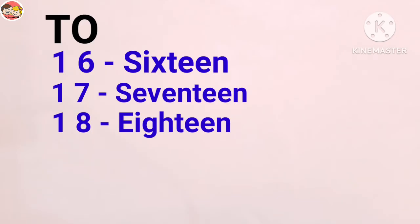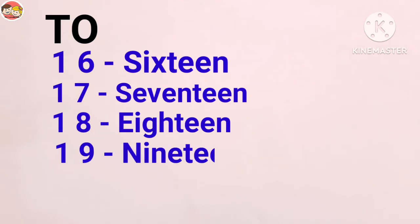There is only one T in 18. Next, nineteen — one nine, 19: N-I-N-E-T-E-E-N. 19. Nine plus 10 equals 19.